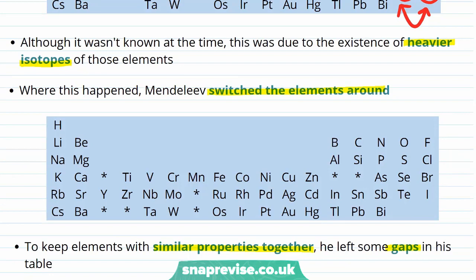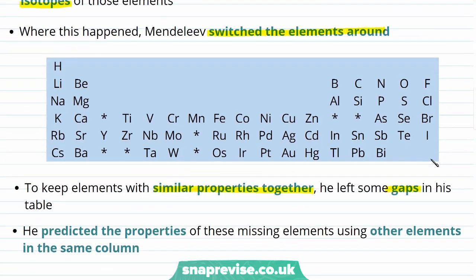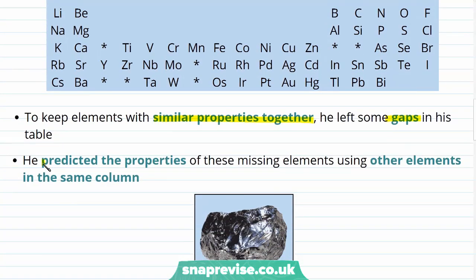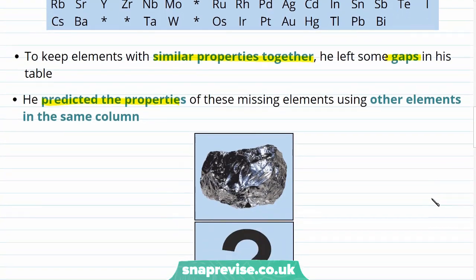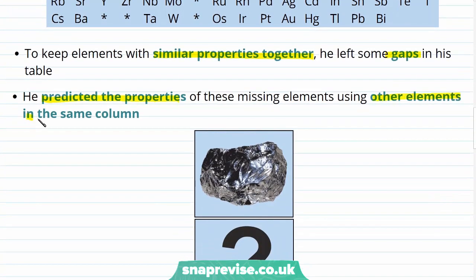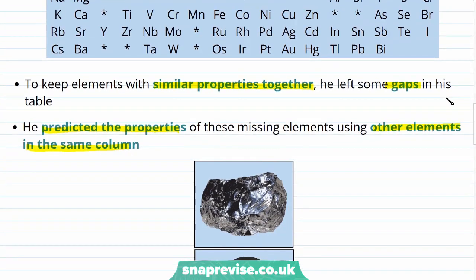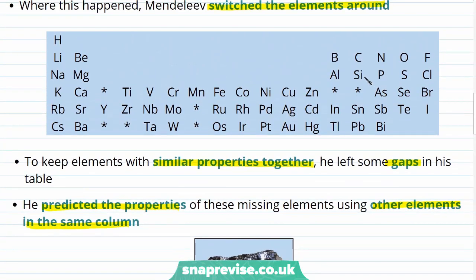The logic behind ordering the table in this way was proved to be good by the fact that Mendeleev was able to predict the properties of these missing elements using other elements that were in the same column. For example, he suggested that there would be a missing element between silicon and tin in the periodic table, shown by this star.